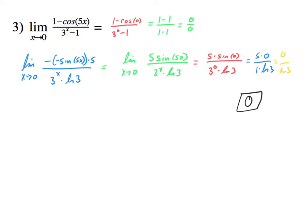By the way, if for some reason when you plug it in you get 0 over 0 again, you can apply L'Hôpital's again. You could go and take the derivative of the top and bottom once again. You can keep doing it over and over again. As long as your new result is 0 over 0 or infinity over infinity, you can keep applying L'Hôpital's repeatedly — and that's sometimes what you need to do.